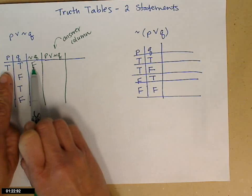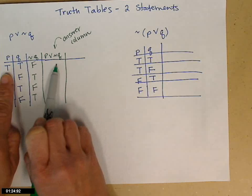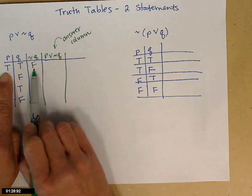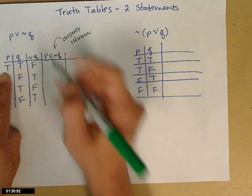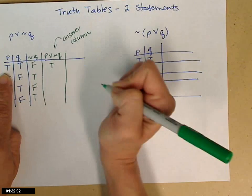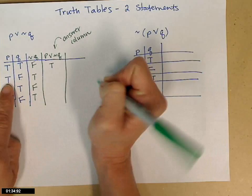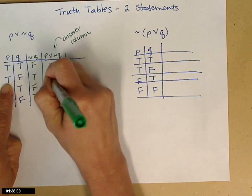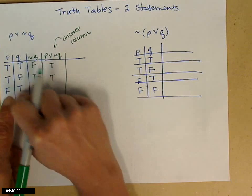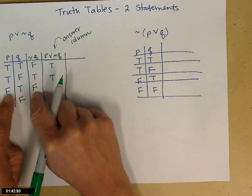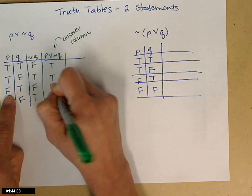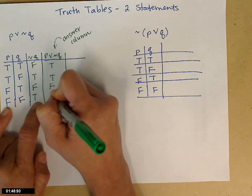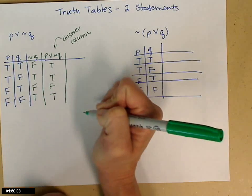If either one is true, then my answer is true. So if P is true in this case, it doesn't really matter what not Q is, because I get my true from the first, because it's or. Next row, I have true or true. Well, that's obviously true. False or false. Neither of those is true, so my answer is false. And then that last one, false or true. I have one true, so that works with or. So I'm done.